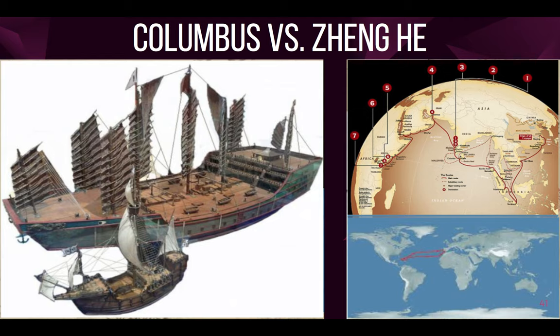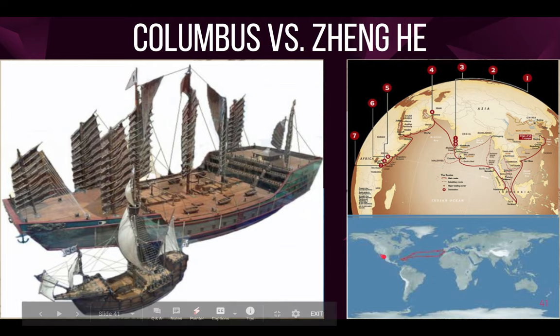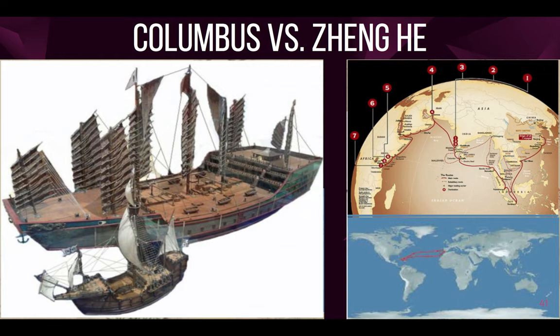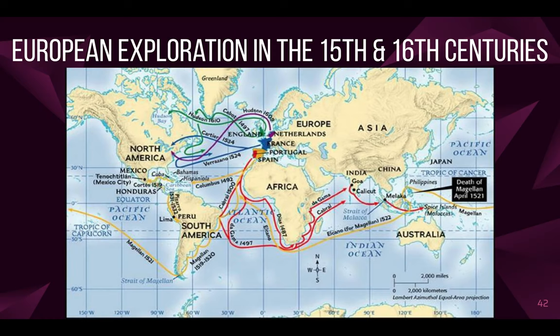Columbus actually miscalculated the circumference of the Earth by about 25%, and he believed that he was in India until the day he died. One of the reasons you might ask why you don't know more about Zheng He is that if you're studying American history, it may be left out of the textbook. Also, Zheng He's voyages mark the end of the age of exploration for China — the Ming Emperor was actually a little jealous and paranoid about the notoriety Zheng He gained, and he shut them down after that.